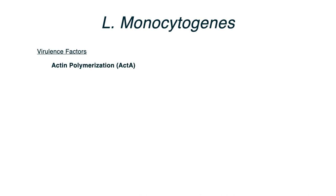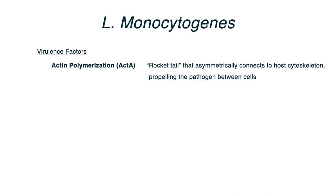Listeria has two major virulence factors. One is called actin polymerization, also written as Act A — it means the same thing. This is a 'rocket tail' — that's a buzzword — that asymmetrically connects from the Listeria to the host cytoskeleton, and once connected, propels the Listeria between cells.